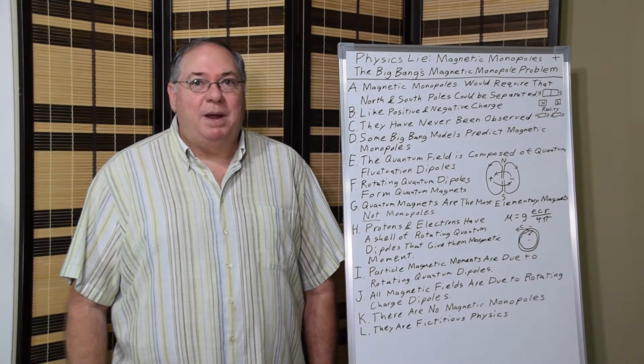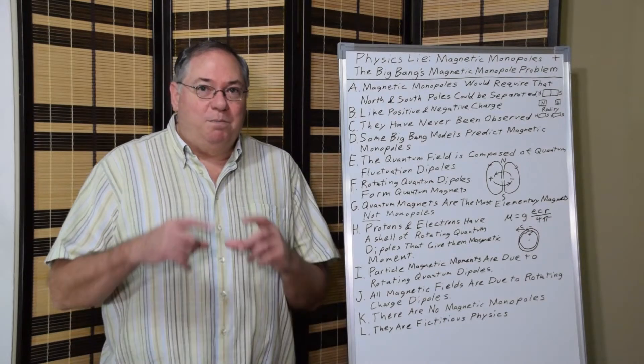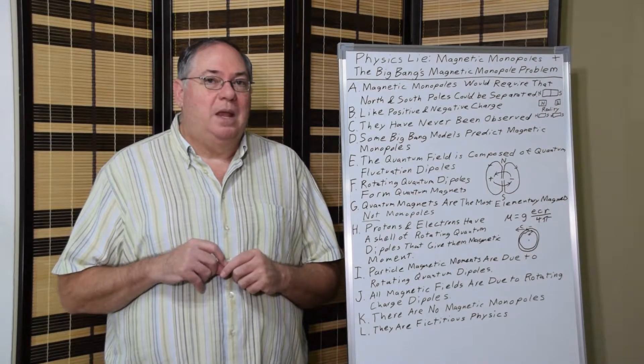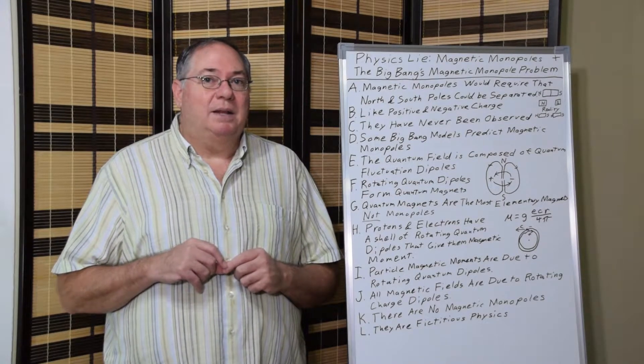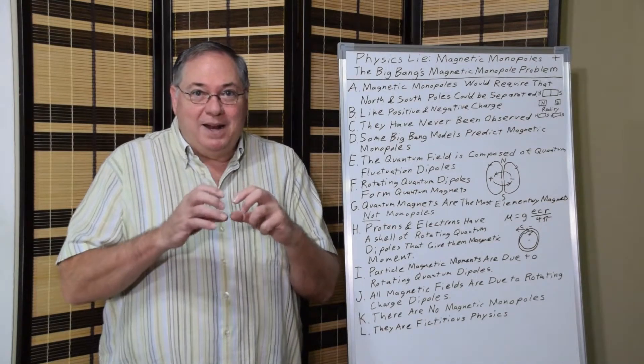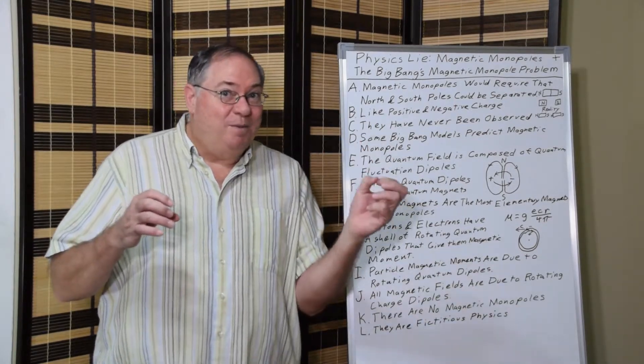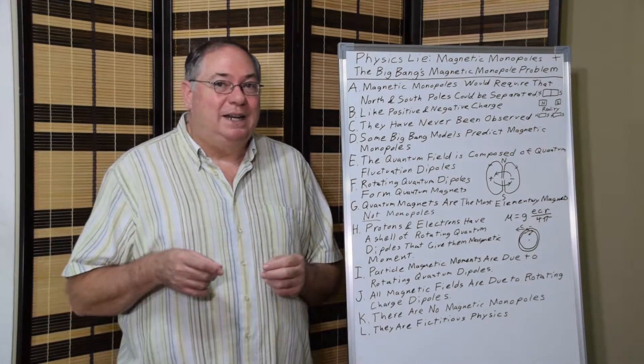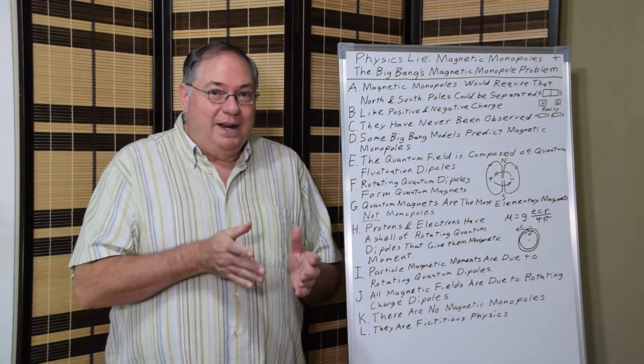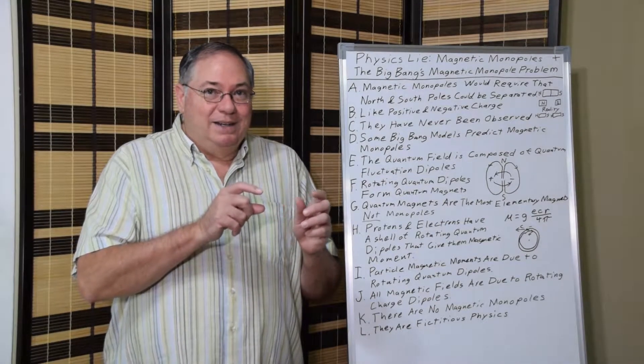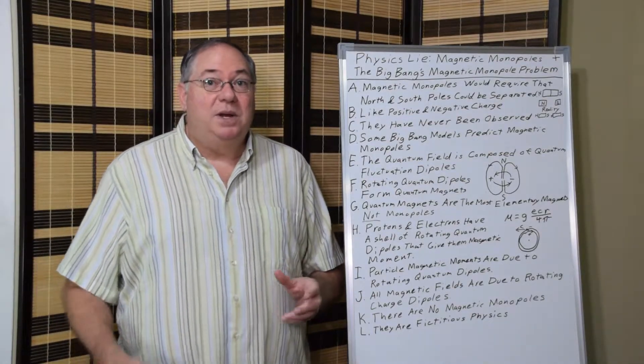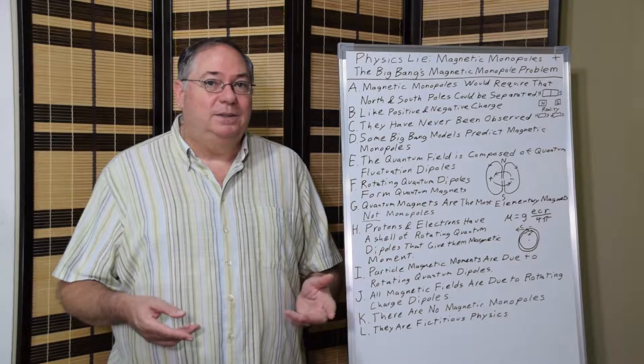If you're not familiar with magnetic monopoles, in a normal bar magnet it has a north pole and a south pole. So the idea with magnetic monopoles is that you could somehow split the magnet in half, separate it, and have a north pole and a south pole that are separate. But in reality what happens is if you split a magnet in half, you get a north pole and a south pole on one part and a north pole and a south pole on the other part. You always have a north pole and a south pole.